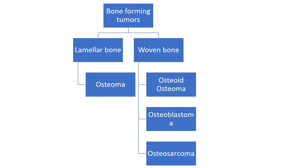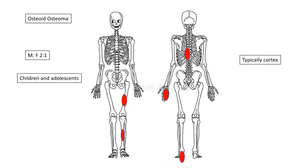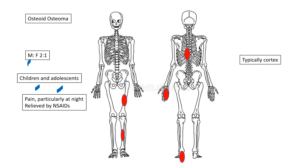We're talking about bone-forming tumors here. We've talked about osteoblastomas, and you'll find out that osteoid osteomas and osteoblastomas have more in common than you think. Let's get the demographic data out of the way. This is slightly more common in men than in women, typically in the first and second decade of life. These patients present with a very characteristic clinical picture: pain, occasionally very severe pain, typically at night, and that is relieved by NSAIDs. That is classic of an osteoid osteoma.